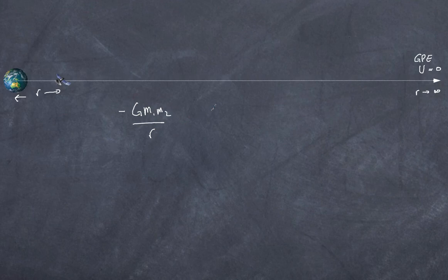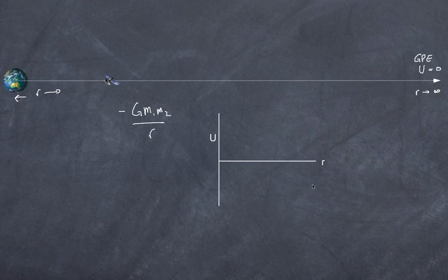Why is it negative? If I move my object away from the Earth I'm doing work, increasing its gravitational potential energy. It's zero at infinity, so all values closer in are negative. Graphically, if we plot gravitational potential energy against distance from the centre of the object, we get a curve that tends to zero and is always in the negative region.